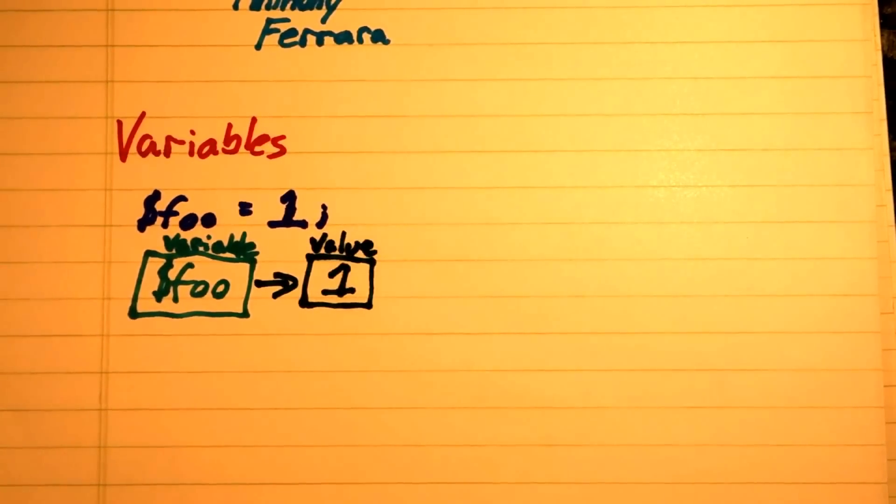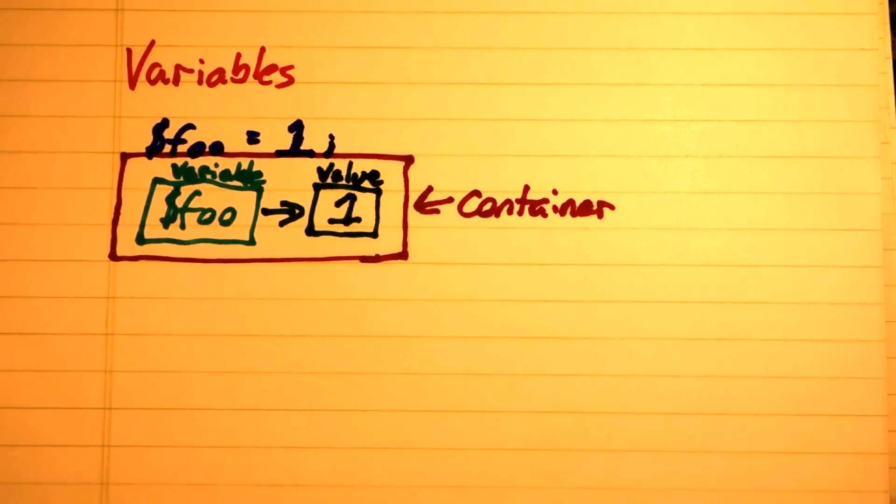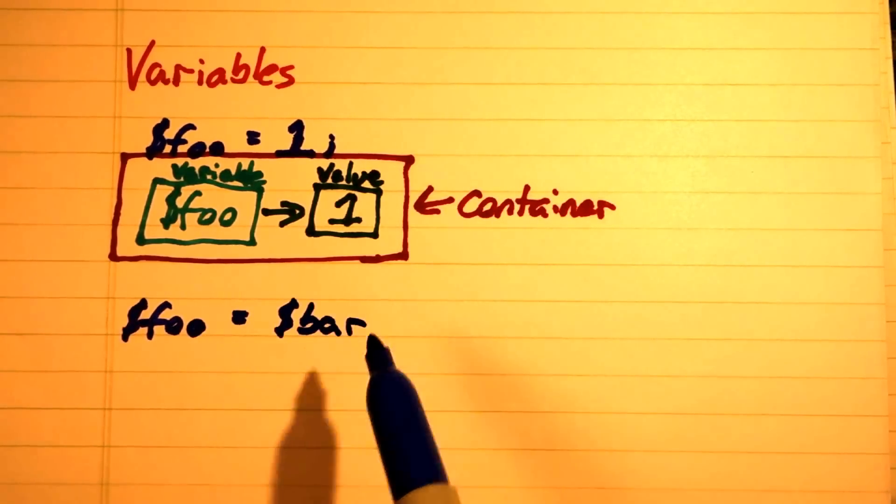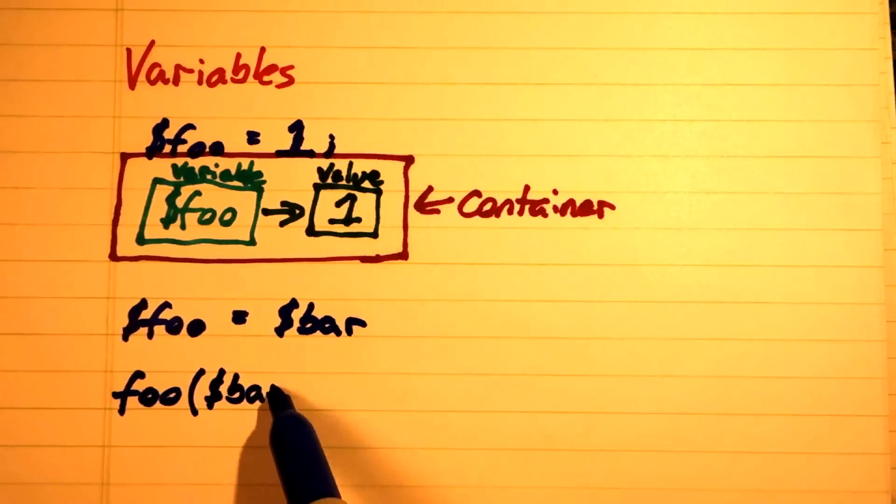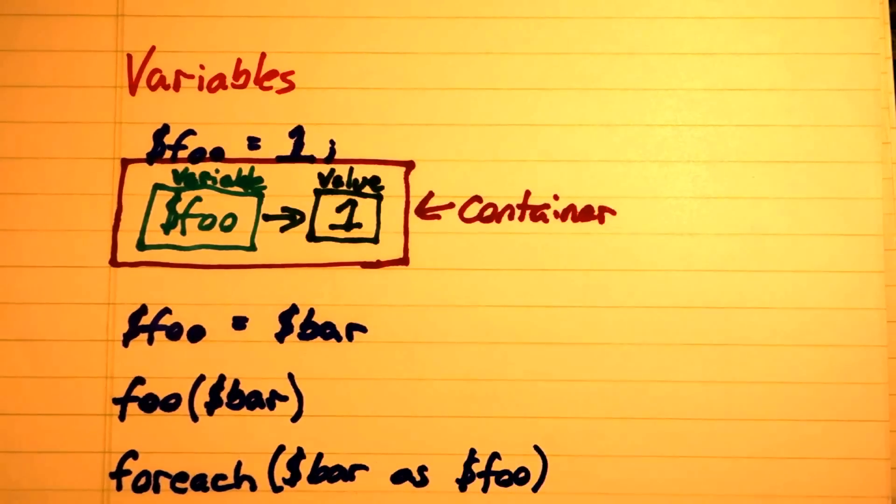But we often find ourselves in a situation where we need to copy a variable. Copies can be as straightforward as directly assigning one variable to another, but copies can also occur in other situations, such as when passing a variable to a function, when returning a variable from a function, or when iterating over a variable.